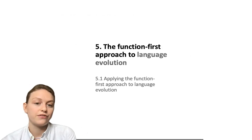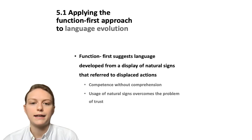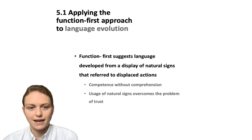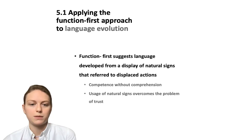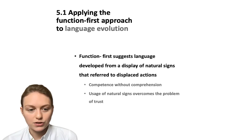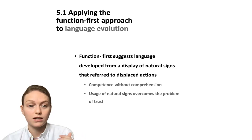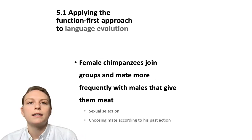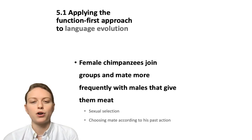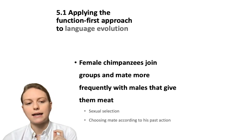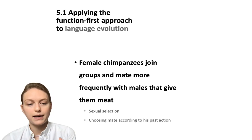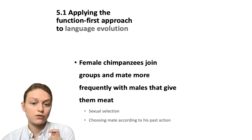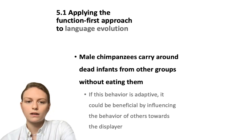Now we move to applying the function-first approach to language evolution. The function-first approach suggests that language developed from a display of natural signs that refer to displaced actions. This is interesting because it allows for competence without comprehension, and the usage of natural signs also overcomes the problem of trust — but we'll come to that. It has been observed that female chimpanzees join groups and mate more frequently with males that give them meat. This could be explained by sexual selection, but it could also be explained by females choosing mates according to their past actions.